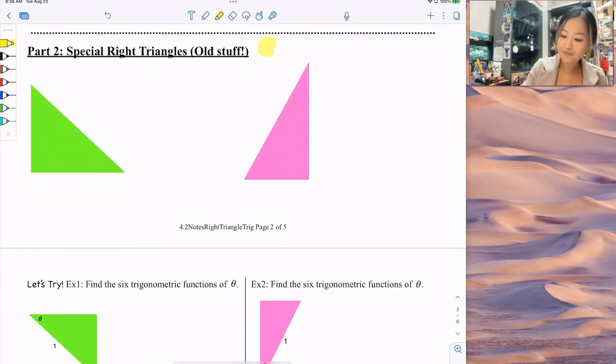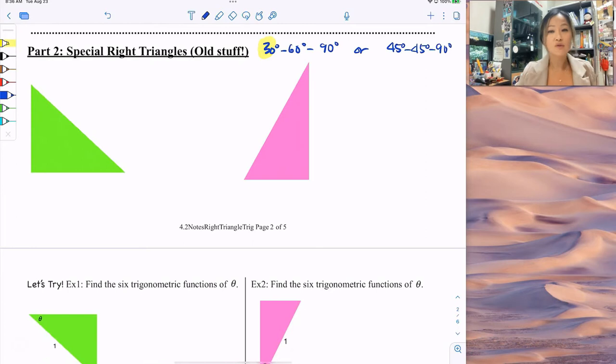It's 30 degrees, 60 degrees, 90 degree triangles, or 45, 45, 90 degree triangles, okay? These are special right triangles. Why? Because they have a special ratio property, right? All right, so let's look at the first one, the green triangle. It's, of course, a right triangle.